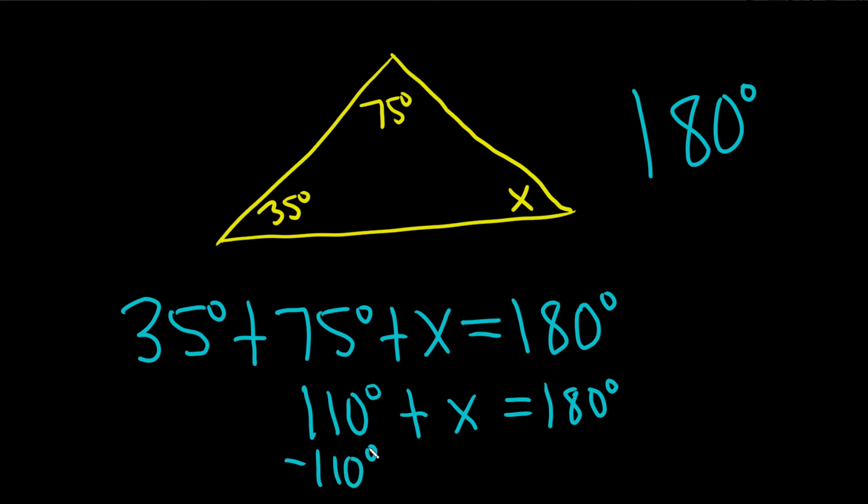Then subtract 110 from both sides. So we end up with x equals 70 degrees, and that would be the measure of this angle here.